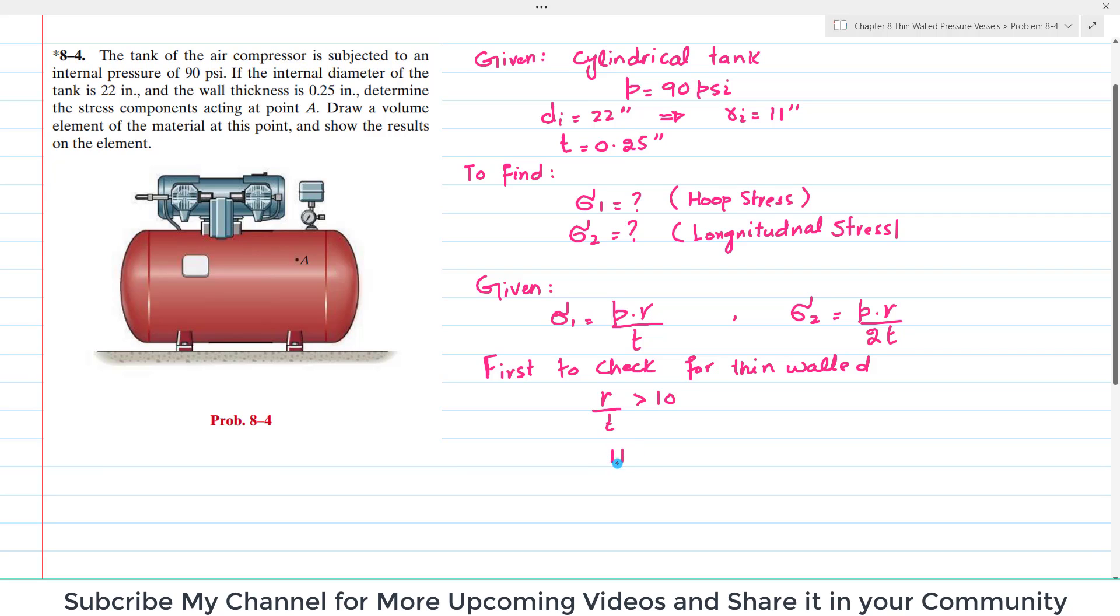You have R is 11, so 11 divided by 0.25 should be greater than 10. This value comes out to be 44, and 44 is greater than 10. So it means that this is a thin walled pressure vessel.